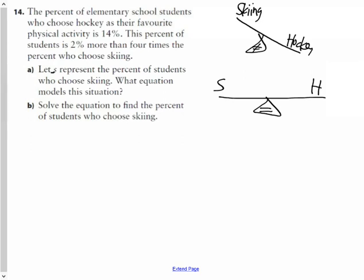The first thing in all of our story problems is going to be: S equals the percent of students who chose skiing. It's actually not the number of students, it's the percent of students that chose skiing.